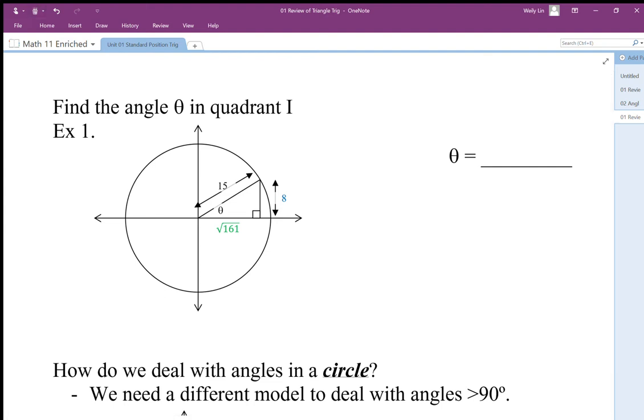What we could do is express this using sine. We can say that sine theta is the opposite or vertical divided by the hypotenuse, which is 15.